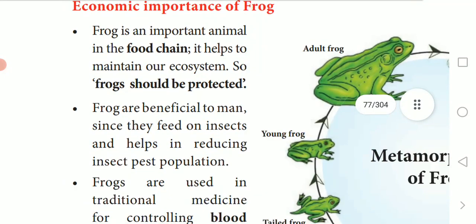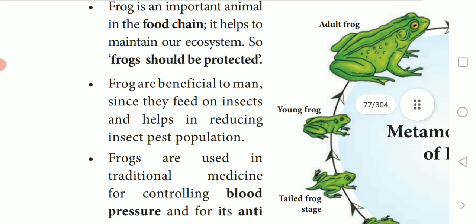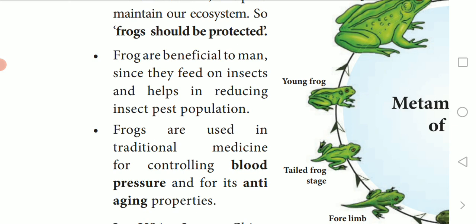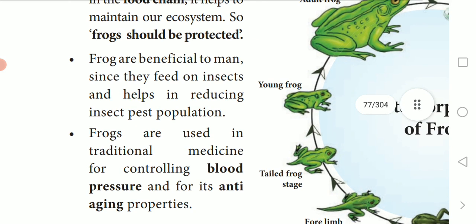Frog is an important animal in the food chain and helps to maintain our ecosystem. So frogs should be protected. Frogs are beneficial to man since they feed on insects and help in reducing insect pest populations.